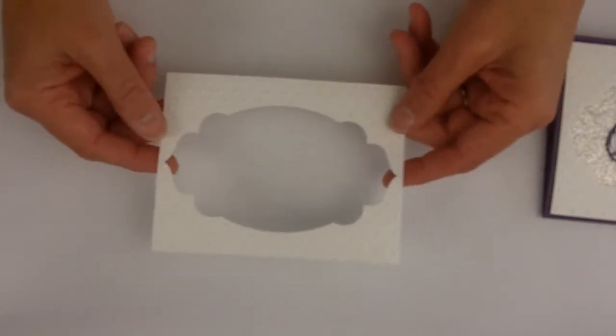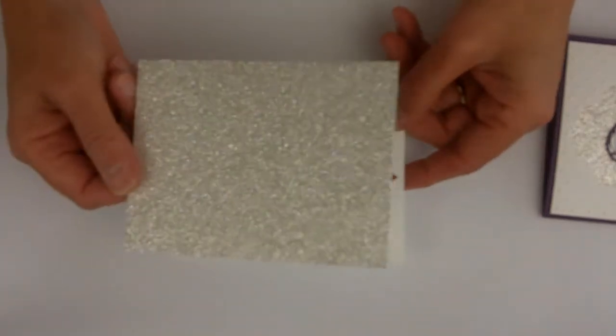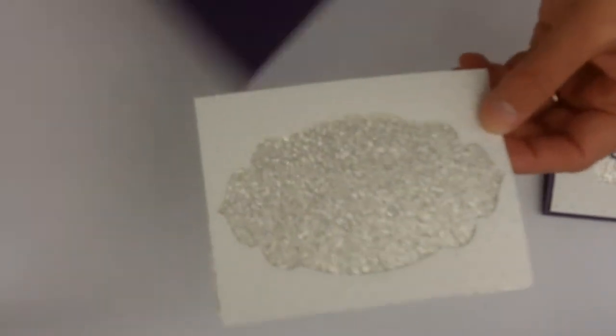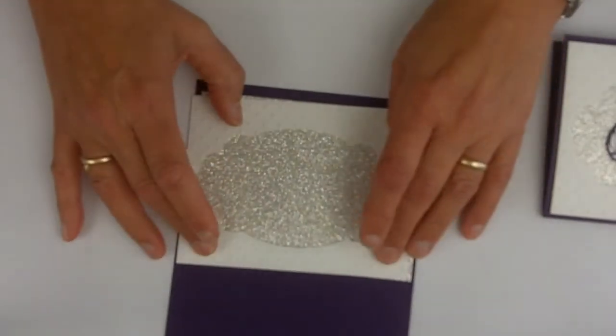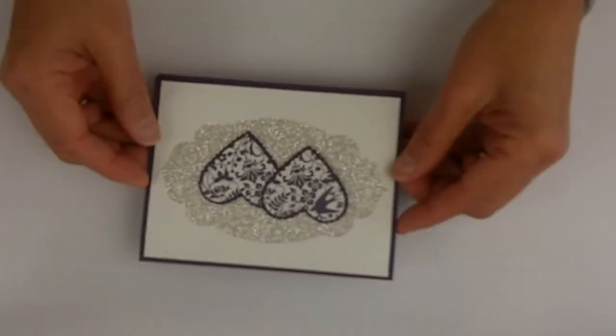Then I took that and put it through the Perfect Polka Dots folder, and now realize we've got this pretty inside to use for another card. Then we have a layer of the silver glimmer paper and that's all going to go on the Elegant Eggplant. So that's the base of our card. I did find using these glue dots was a better way of putting them together, or even the sticky strip. It was a little harder to have the snail adhesive work.